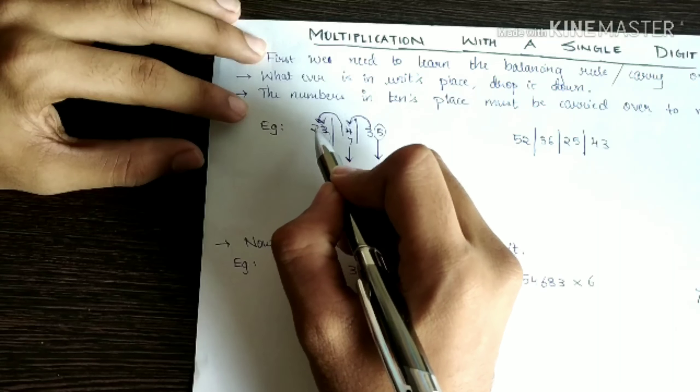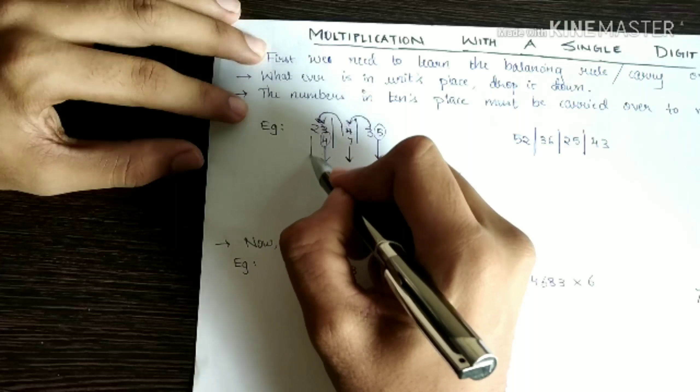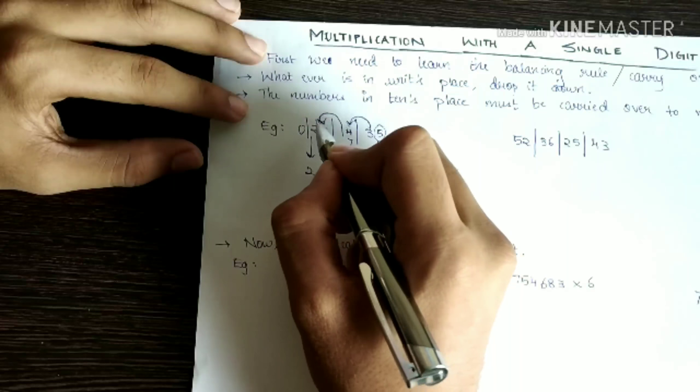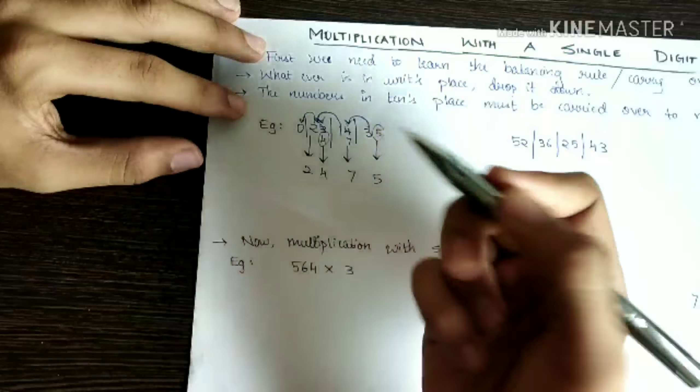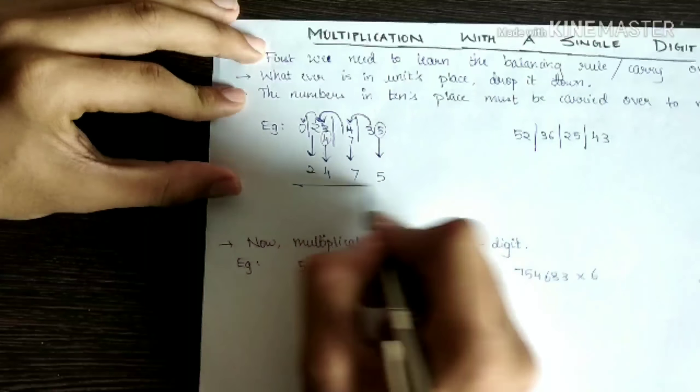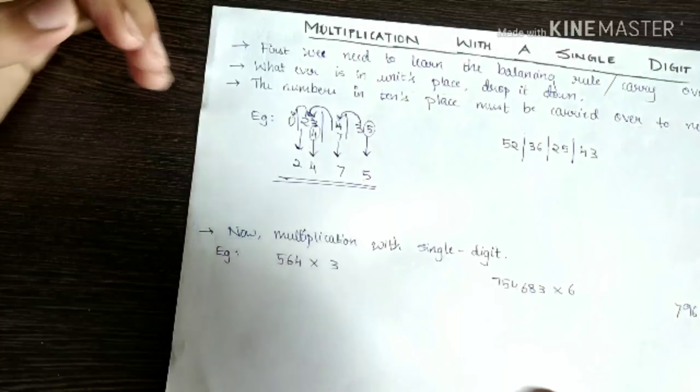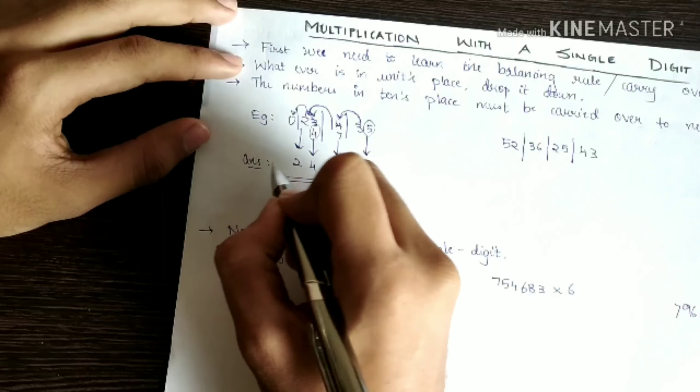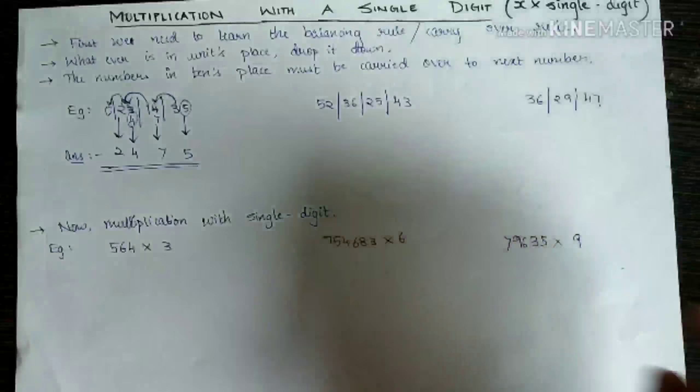Drop it down because we have to drop whatever is in units place. The next is two which is in tens place. You can't add to anything. So you have to drop that down also. Or if you want you can take it as zero and add it to zero. Two plus zero is two. In that way also you can do. So final answer will be two four seven five. You might be wondering why do I need this. What kind of answer is this. You will get to know in a few minutes.